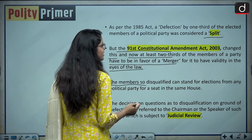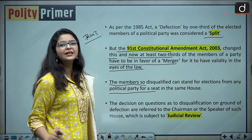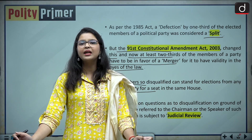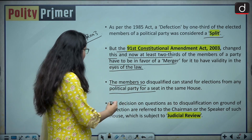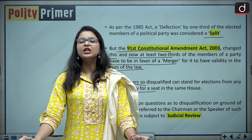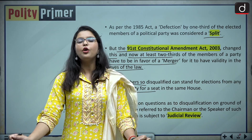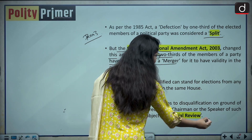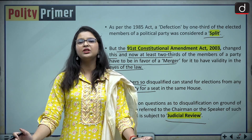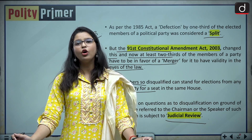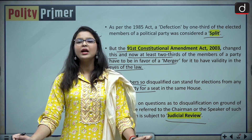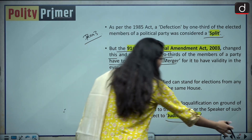Members so disqualified can stand for elections from any political party for a seat in the same house. The decision on questions of disqualification will be decided by the Speaker in the case of the Lok Sabha and the Chairman in the case of the Rajya Sabha, and this decision is subject to judicial review. Judicial review means review of the decision by the higher judiciary if it appears to be mala fide or arbitrary in nature, but this can only be done on limited grounds.